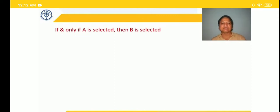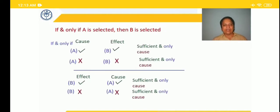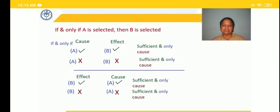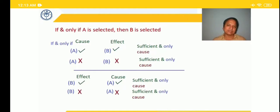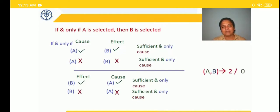One more statement: 'If and only if A is selected, then B is selected.' Here the cause is selection of A and effect is selection of B. 'If and only if' means there is a single cause that is both sufficient and the only cause for the effect. So: if A is selected, B is also selected. If A is not selected, B cannot be selected. If B is selected, A would have definitely happened. If B is not selected, cause also doesn't happen. We write this as A, B — either both are there in the team or none are there.